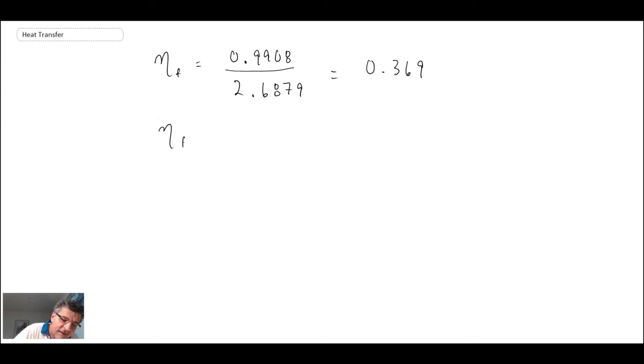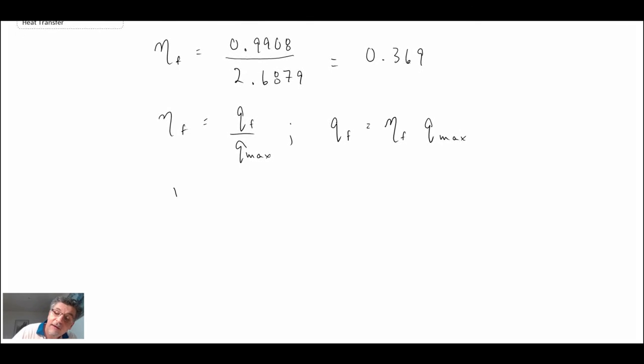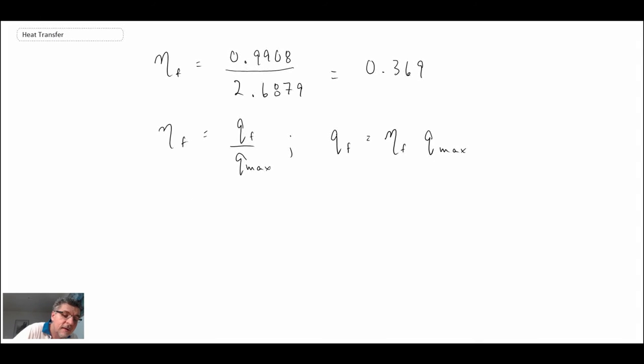So we said the fin efficiency was Q fin divided by some hypothetical maximum. That would be if the entire fin was at the base temperature. So from that equation, we can evaluate the heat transfer from the fin as being the efficiency, the 37% efficiency times that Q max. Q max, that is if the entire fin is at the base temperature. So the wetted area of the fin is going to be the corrected length times the perimeter. And then that's going to be multiplied by assuming the entire fin is at the base temperature minus the freestream temperature plugging in values.